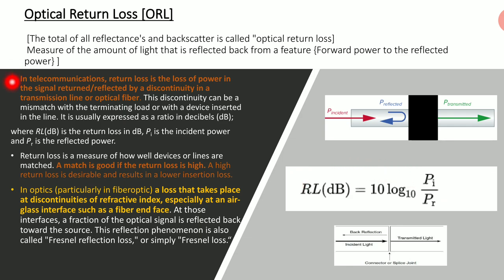In telecommunication, return loss is the loss of power in the signal returned or reflected by a discontinuity in the transmission line or optical fiber. This discontinuity can be a mismatched terminating load or a device inserted in the line. It is usually expressed as a ratio in decibels, where RL is the return loss in dB, Pi is the incident power, and Pr is the reflected power in milliwatts or watts.